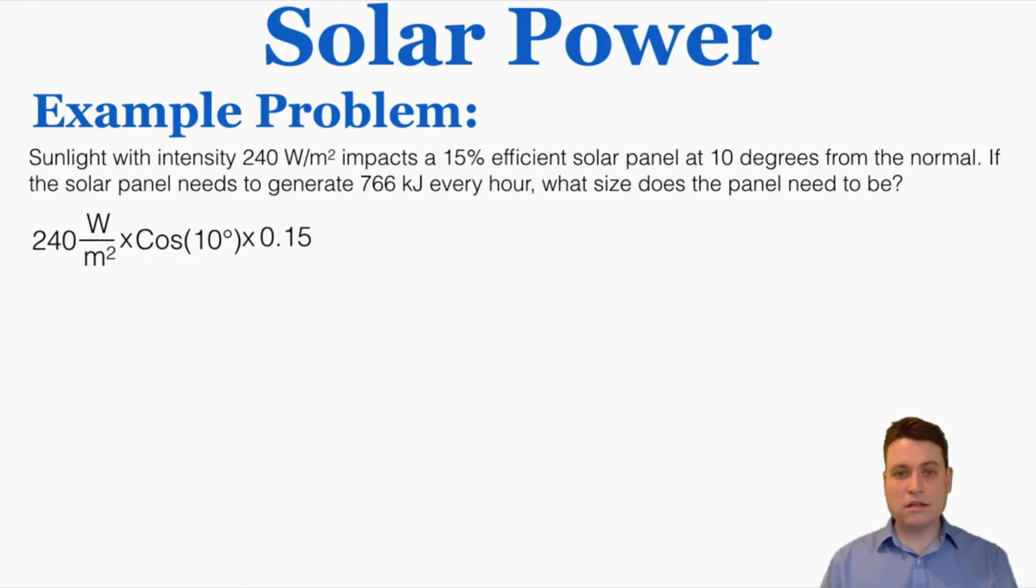So that means that the power that we get out based on the intensity is actually only 35.5 watts per meter squared. Because we're working with joules and a time, I'm going to convert that from watts to joules per second. So when I do that, I get 35.5 joules per second meter squared.